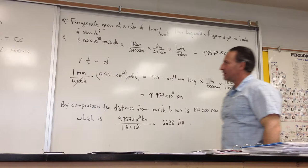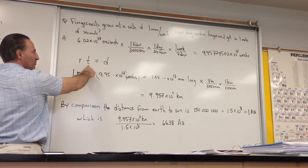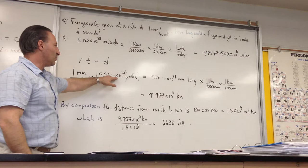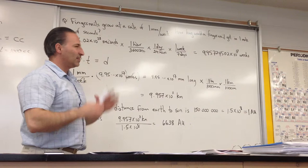Now we know the rate of growth of our fingernail and the amount of time it's going to grow for, so what's the distance going to be? 1 millimeter per week times that many weeks gives us 9.95 times 10 to the 17 millimeters. It's kind of hard to get your head around that number in millimeters,